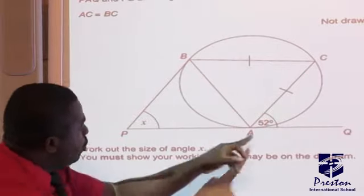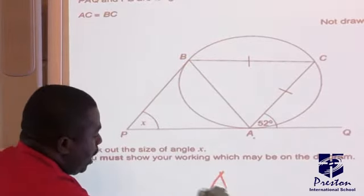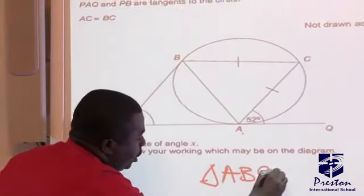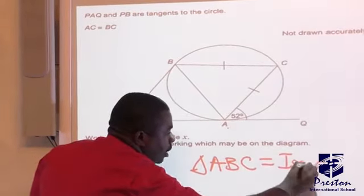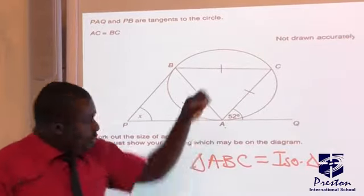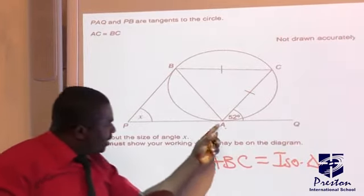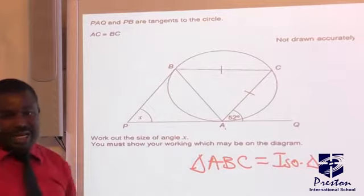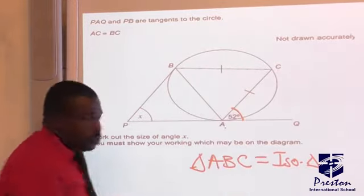That one is giving us the information that the two tangents are equal. And if they are equal, it means triangle ABC is an isosceles triangle. Now look at AC. AC is a chord and AC is a tangent to a circle.